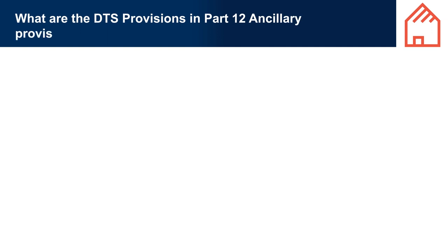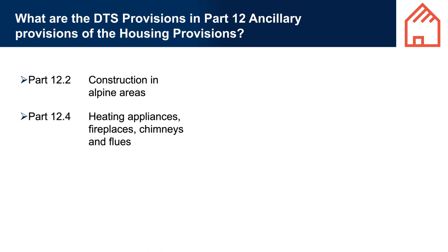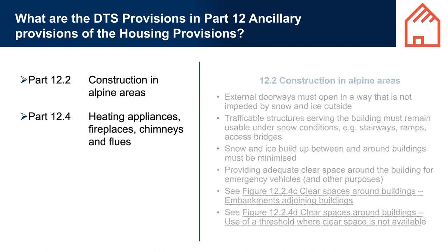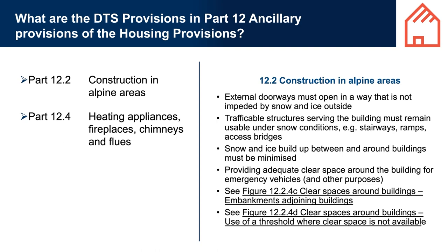What are the DTS provisions in Part 12 Ancillary Provisions of the Housing Provisions? Part 12 contains DTS provisions for complying with the relevant DTS requirements of Part H7 of Volume 2, covering two of the four fire safety related performance requirements in H7: H7 P3 Heating Appliances and H7 P4 Buildings in Alpine Areas.